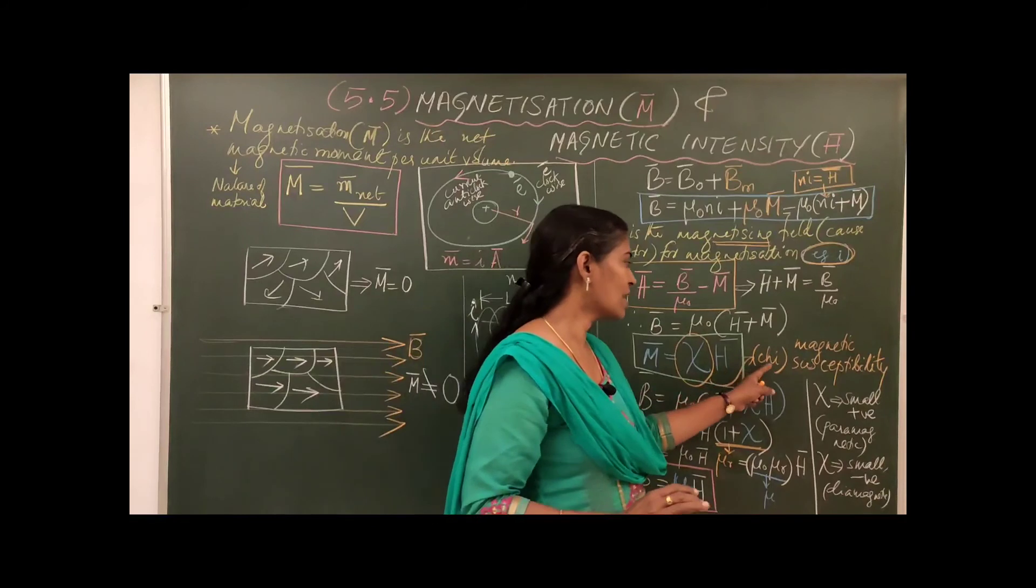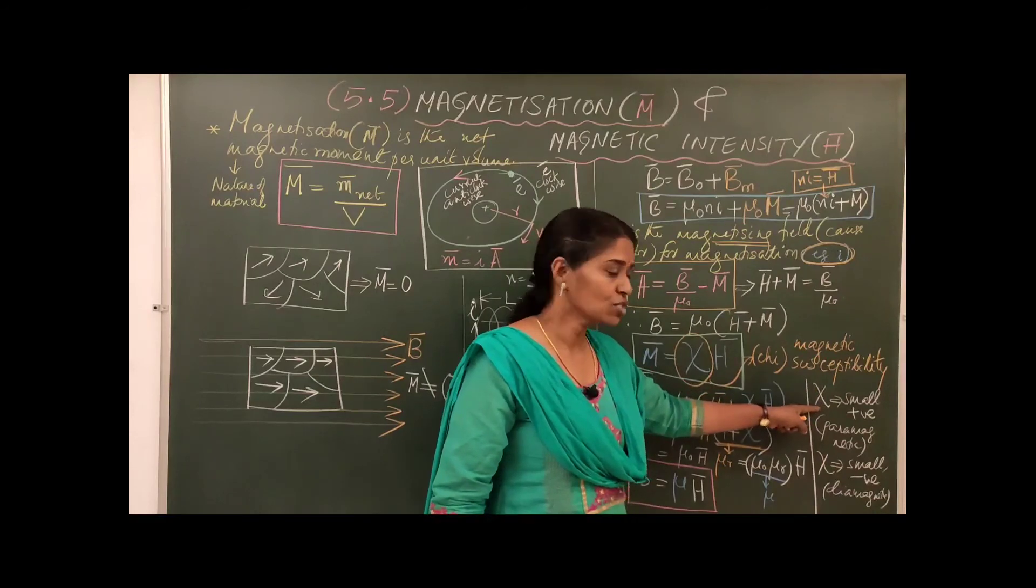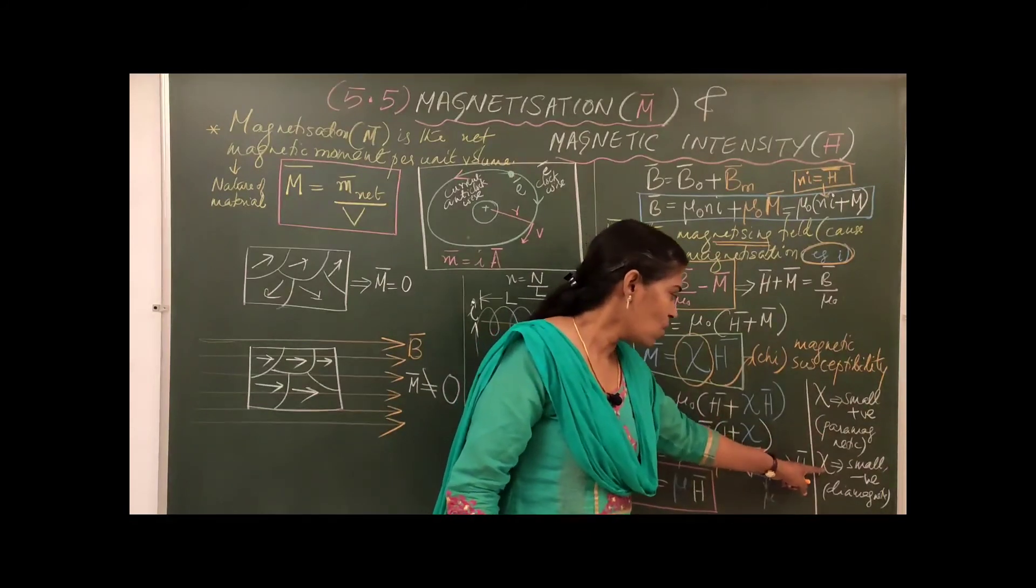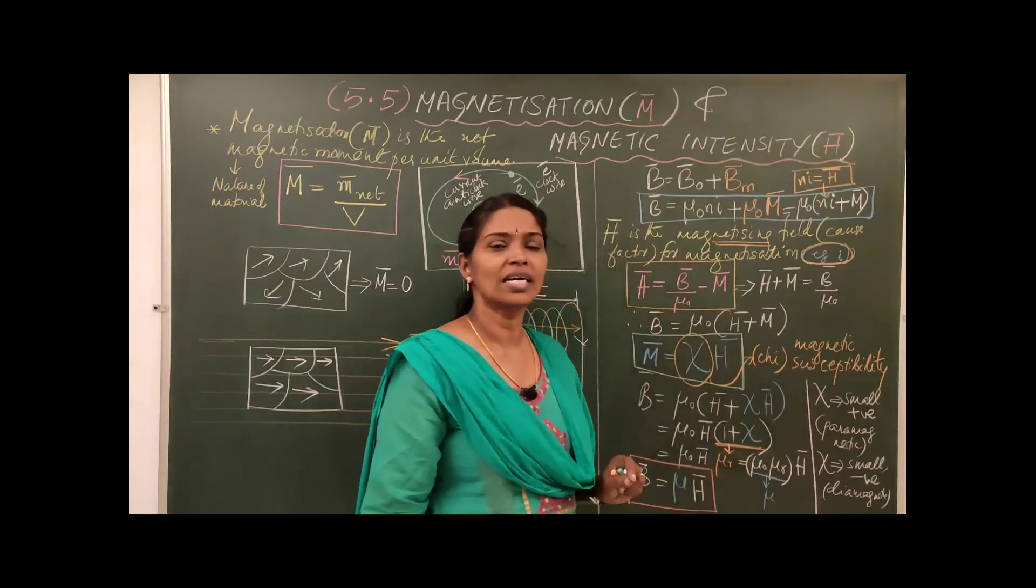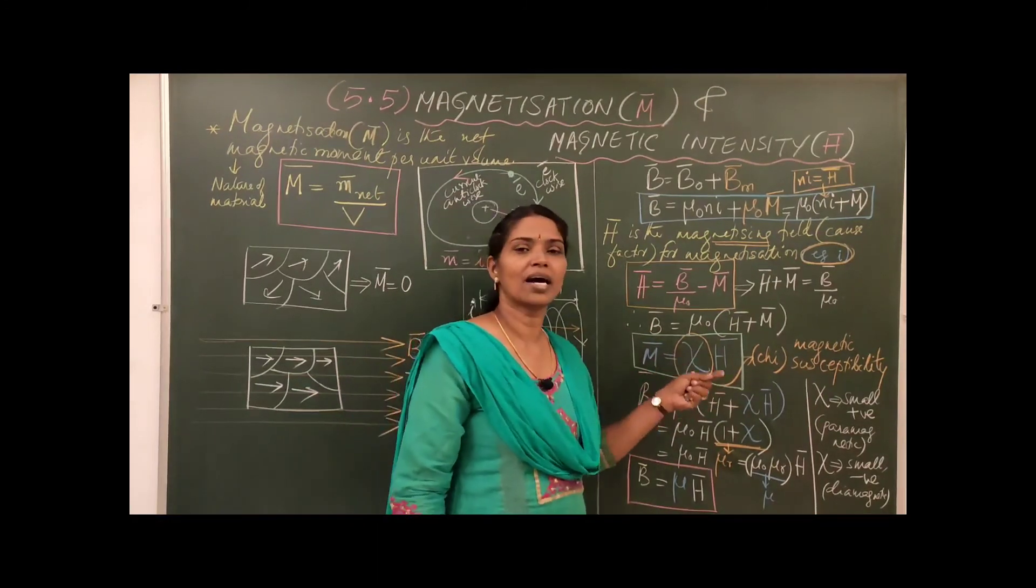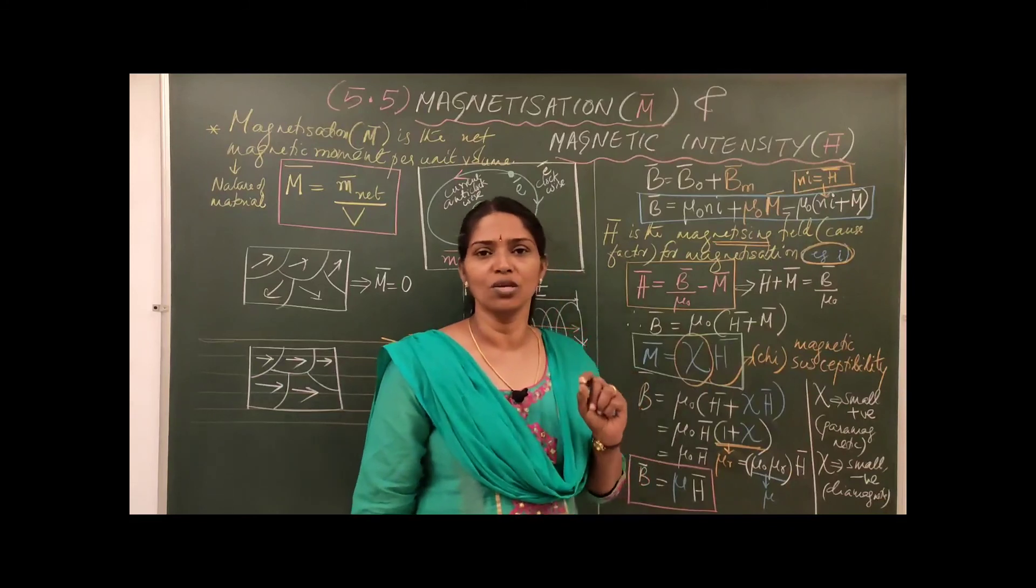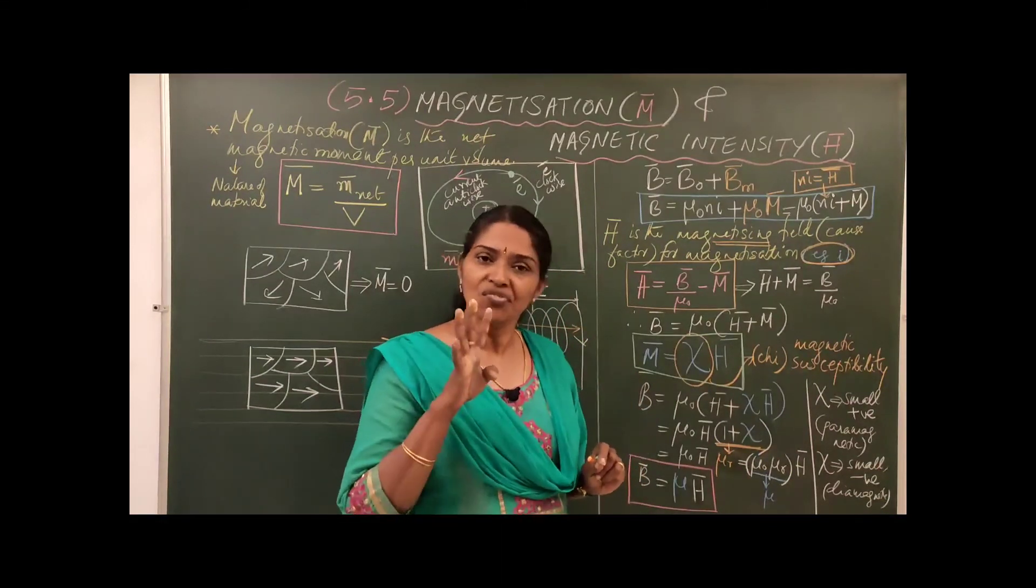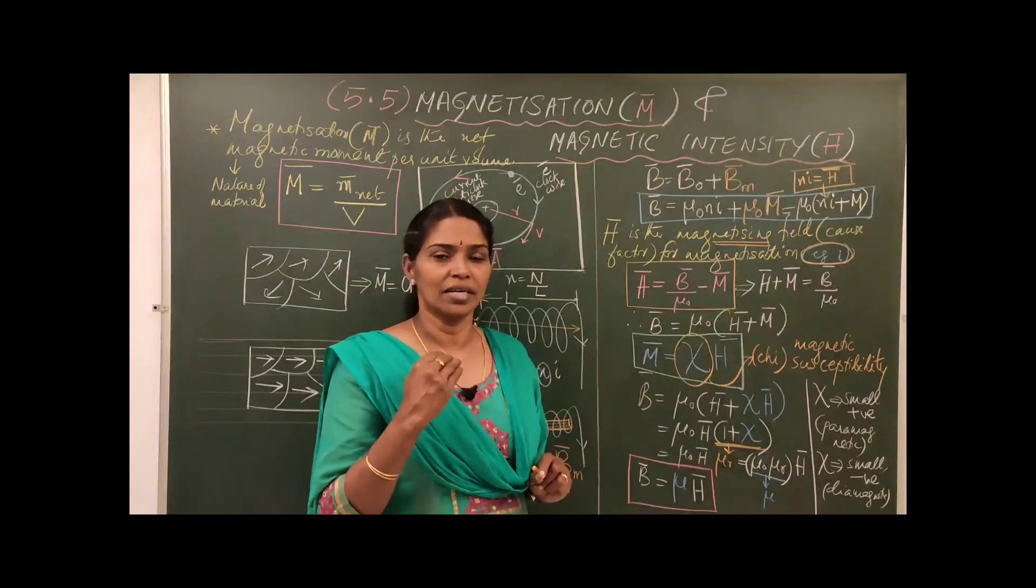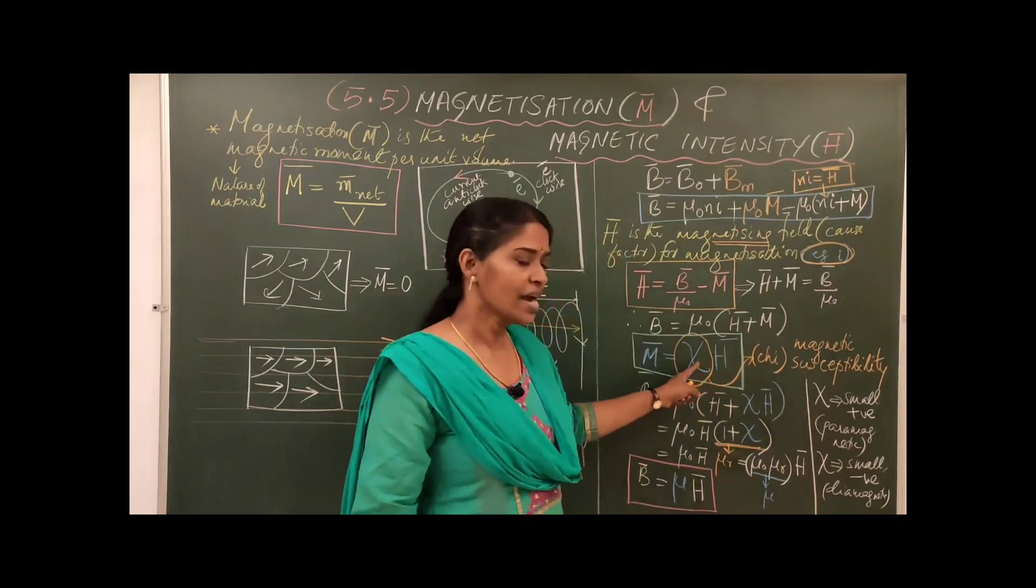Now I told you the term chi or magnetic susceptibility. With magnetic susceptibility having values small and positive, they come under the category paramagnetic. Small and negative comes under diamagnetic. So to categorize materials like dia, para, ferro and all, the information magnetic susceptibility is very useful to us. So we have discussed four terms, not three. Namely M bar, H bar, chi and mu r.